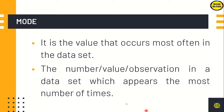Next is mode. Mode is the value that occurs most often in the data set — the most frequent data. The mode of a list of numbers is the number that occurs most frequently, the value or observation in a data set which appears the most number of times.